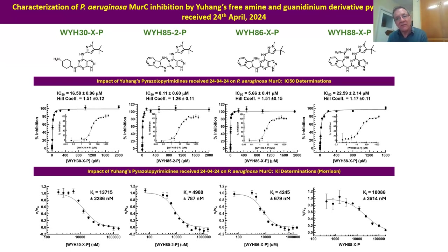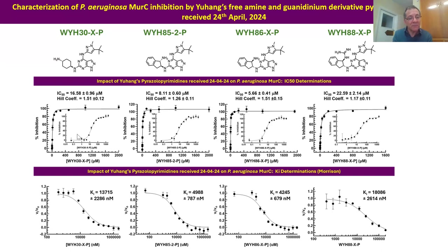They were there because the positive charge was supposedly there to try and enhance permeability through a gram-negative soil, consistent with literature. The microbiology has been done — I don't know yet what the data say, but it should be coming your way. So we basically just did the IC50 work against Pseudomonas aeruginosa MERC.